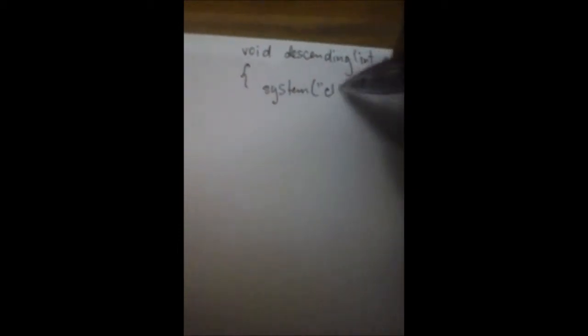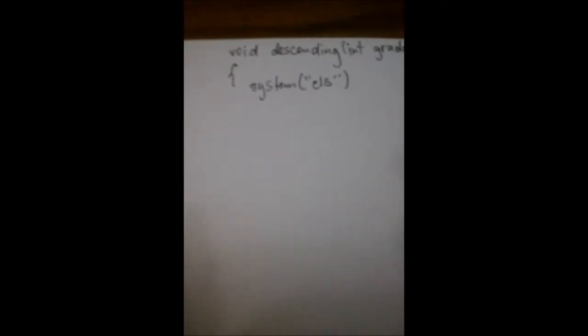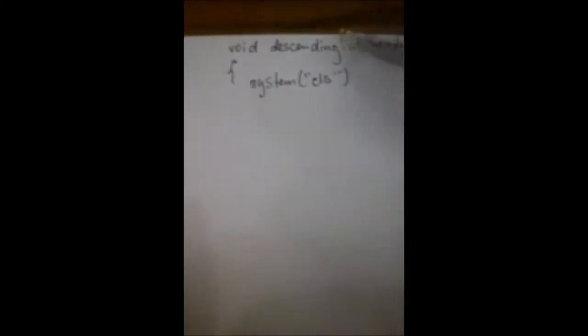So, in our function void, let's use, let's say descending. So, let's do our parameters, int grades, then int i. Open, let's start. So I want to use system clear screen so that after inputting the grades, the screen will clear and then the descending order will follow so our program will not have many numbers. So we initialize our variables that we will use in our bubble sort, int a and as.